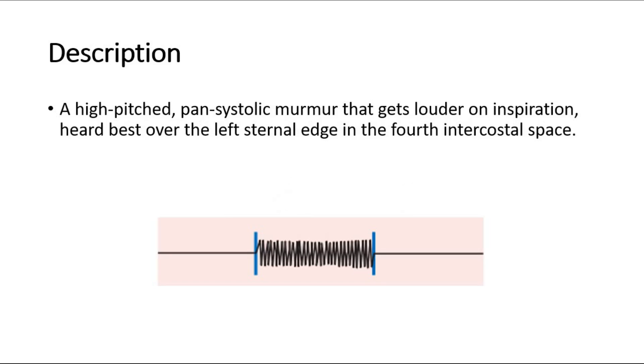Welcome back to another video of Medic Notes. This video is on tricuspid regurgitation murmur, which is a systolic murmur. A tricuspid regurgitation murmur is a high-pitched, pan-systolic murmur that gets louder on inspiration, heard best over the left sternal edge in the fourth intercostal space.